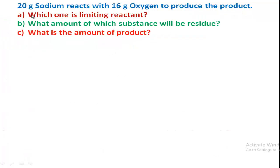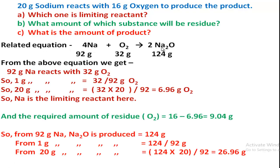Follow another problem: 20 grams of sodium reacts with 16 grams of oxygen to produce the product. The related equation is: sodium reacts with oxygen to produce sodium oxide. We write the formula correctly and check — this equation is not balanced, so we must balance it first. The balanced equation is: 4Na + O₂ → 2Na₂O.